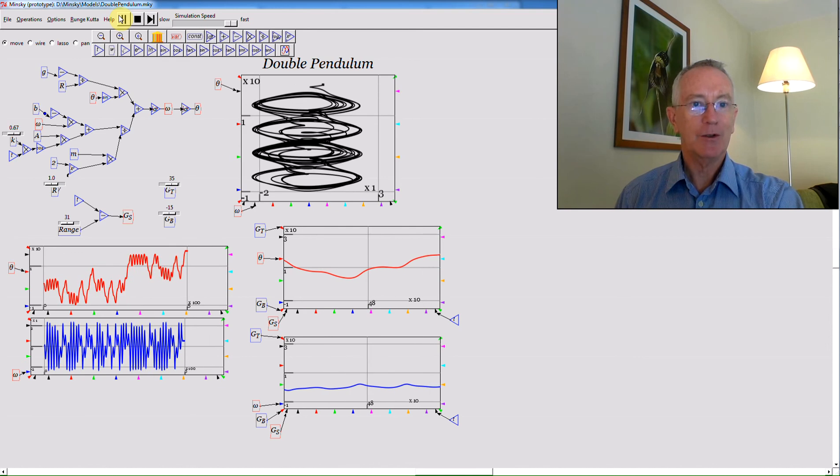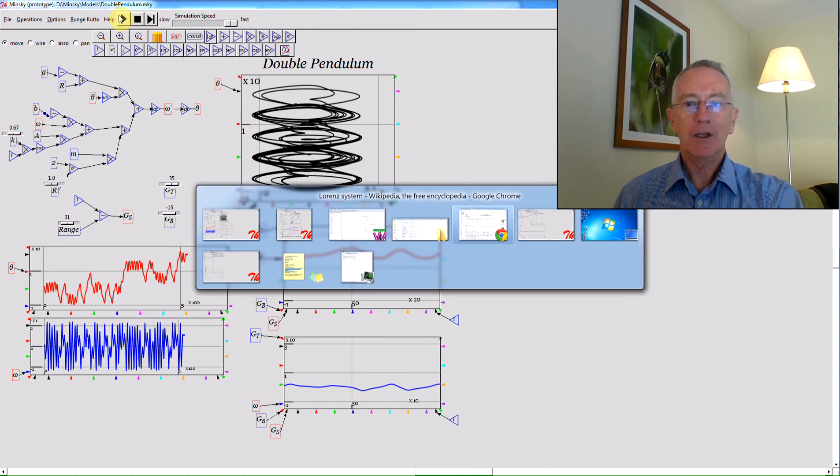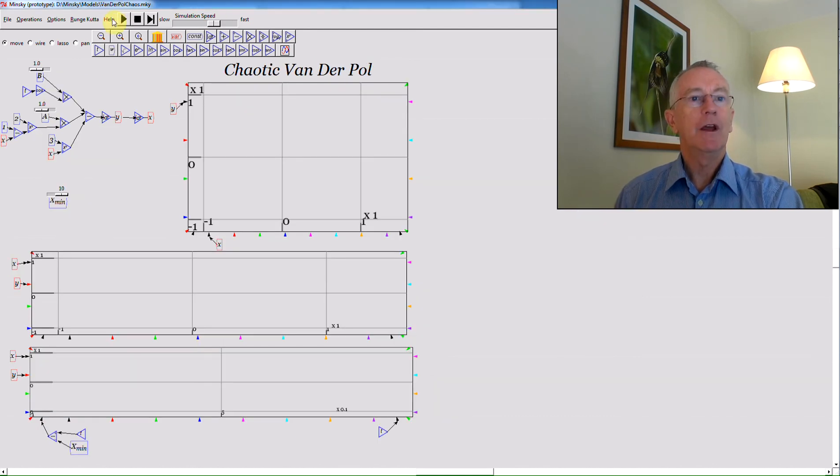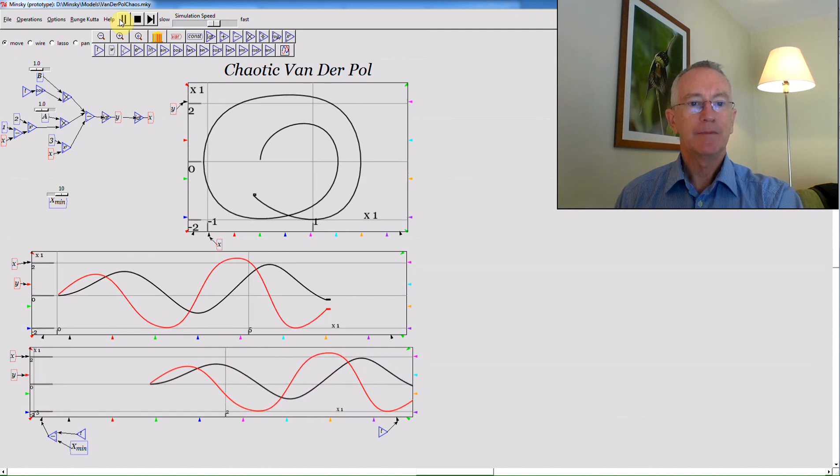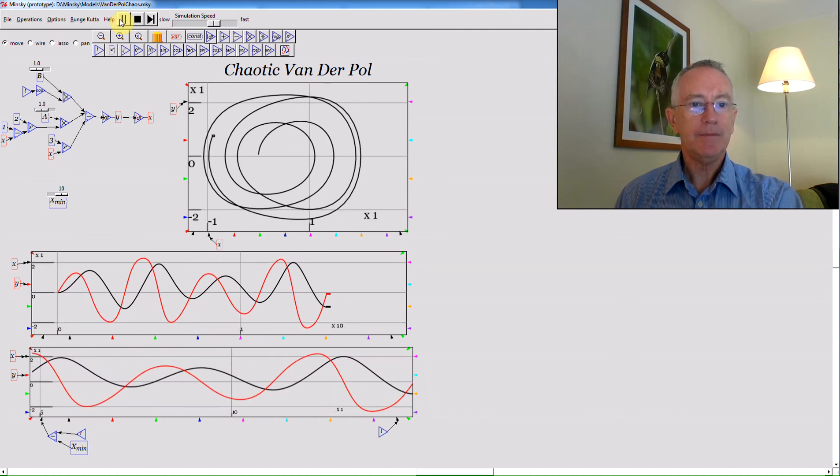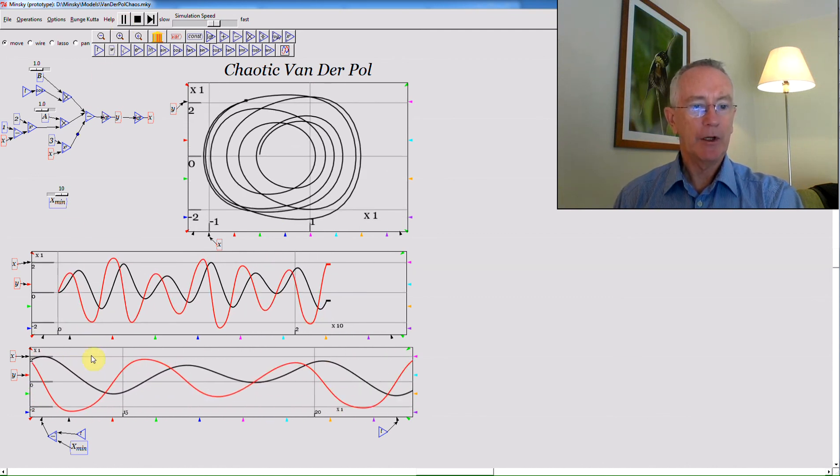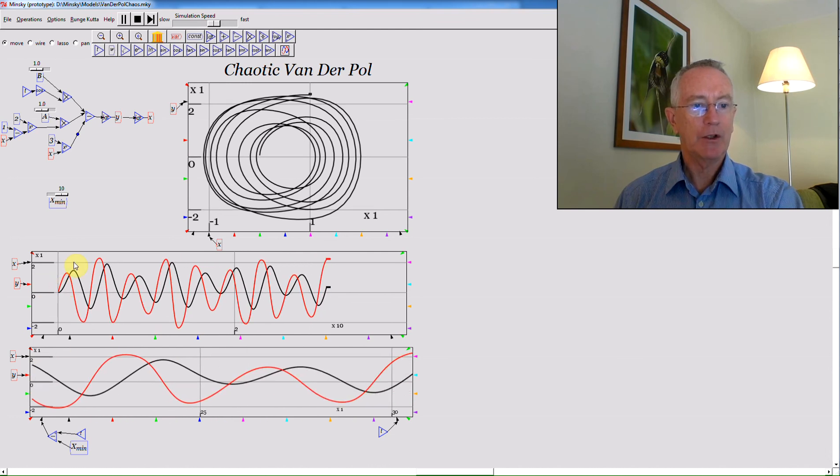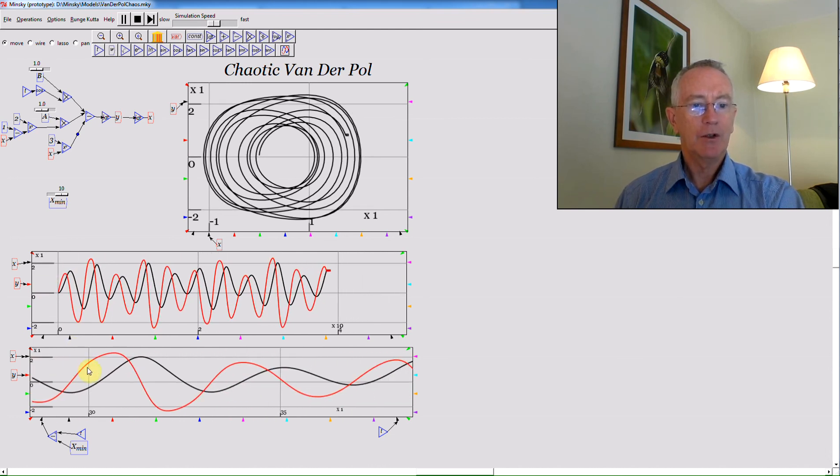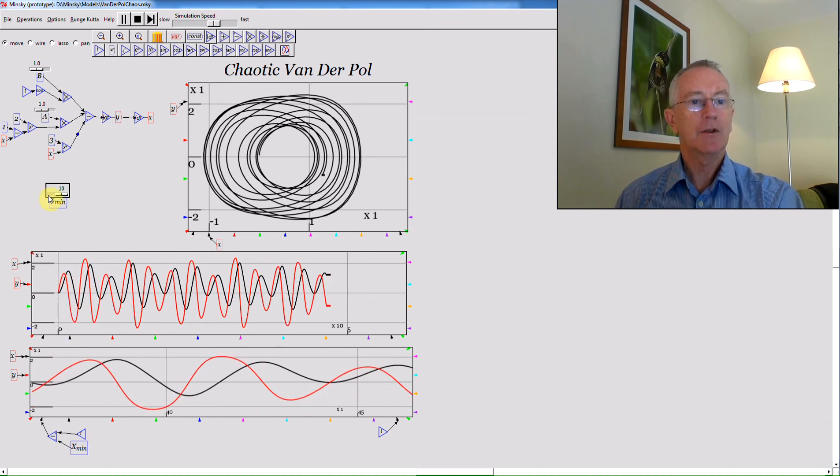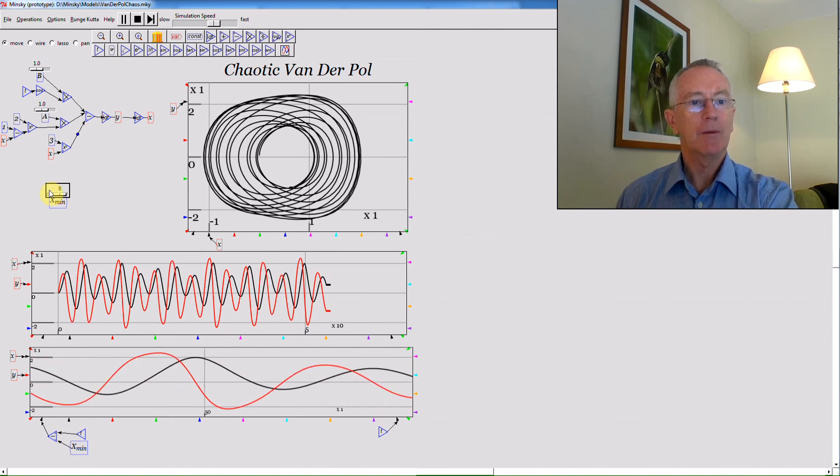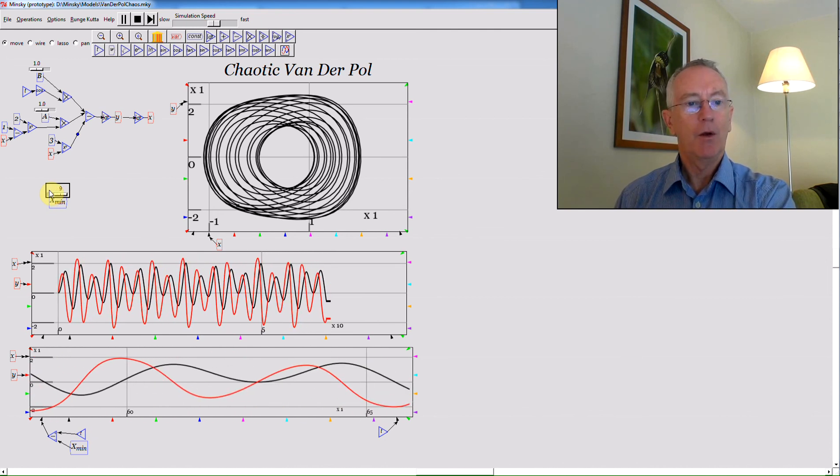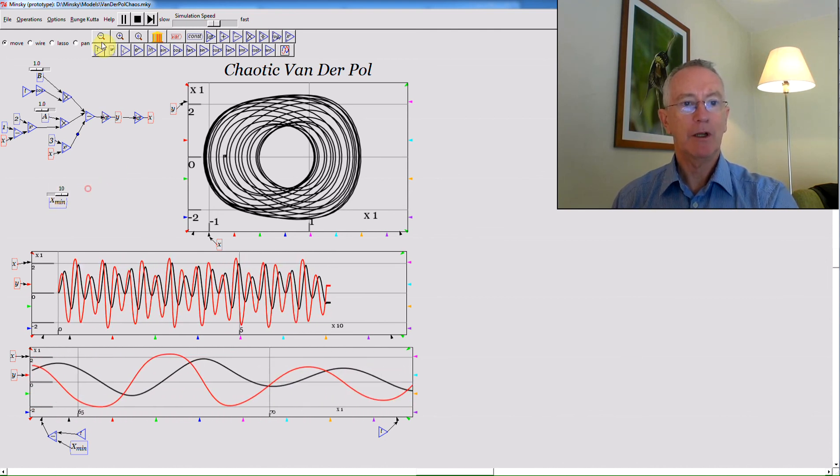Now let's see also the Van der Poel Attractor in chaos mode. And notice down the bottom here I've got a chart which is showing the X and Y values. This is showing a range of the X and Y values, and I can change the range you can see by modifying this little slider here while you're actually running the simulation.